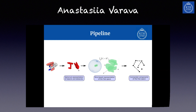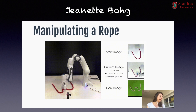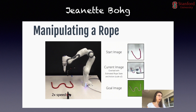We want a robot to be able to replicate a shape with a new rope in a different environment that may look completely different, with a different length, and so on. Here is a demonstration of what we can achieve with the system I'm going to talk about.